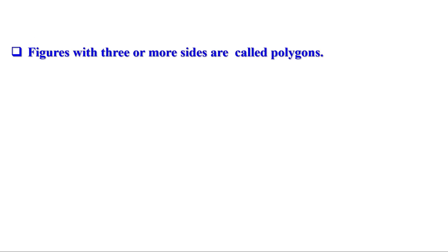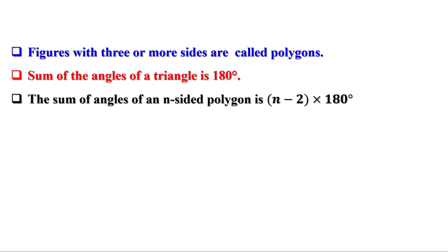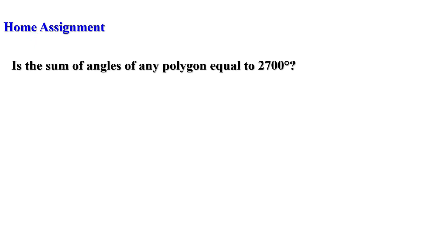Let us recall what we have learned. Figures with three or more sides are called polygons. The sum of the angles of a triangle is 180°. The sum of angles of an n-sided polygon is (n − 2) × 180°. Now a home assignment: is the sum of angles of any polygon equal to 2700 degrees? We shall discuss the remaining part in the next video. Till then, bye.